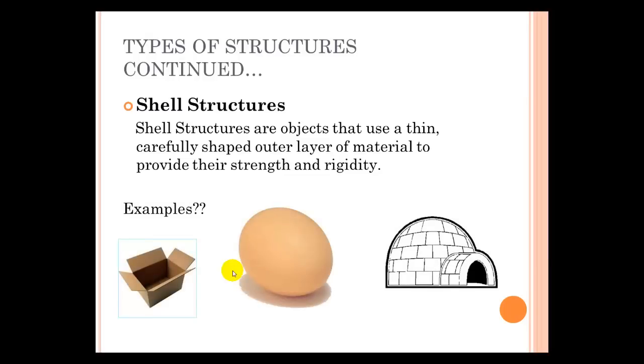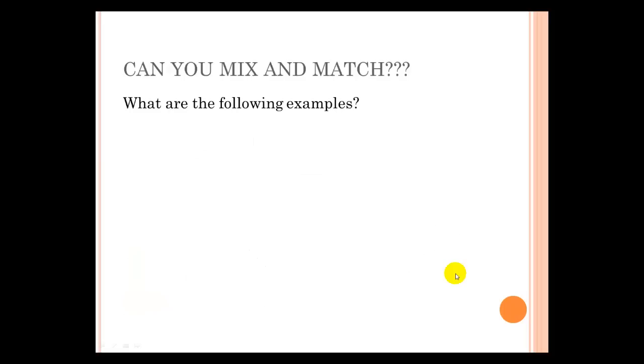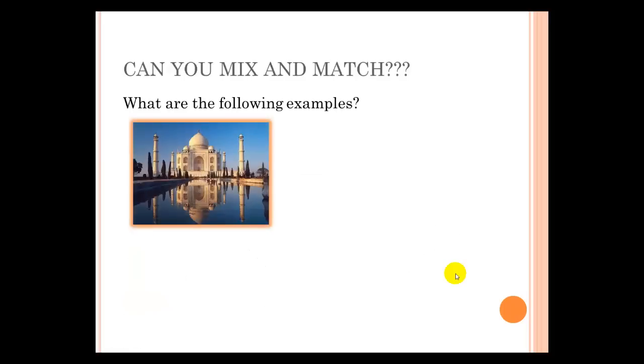What are some examples of a shell structure? So you could say that a box is a shell structure, because it uses a thin layer of cardboard. You could say an egg is a shell structure, because it has the egg shell. And if you hollow out the inside of the snow, you create a thin shell of snow to create an igloo.